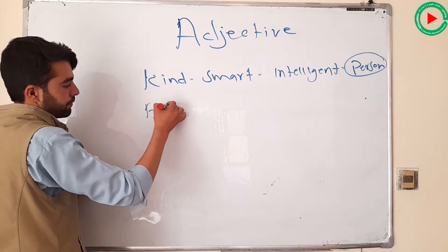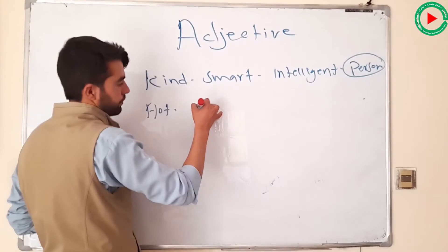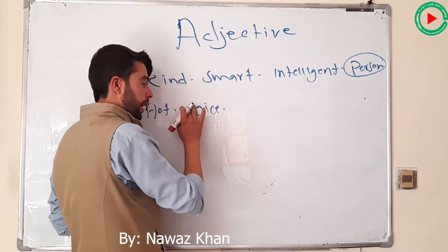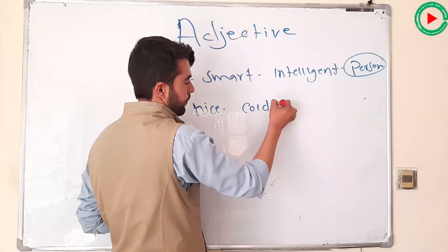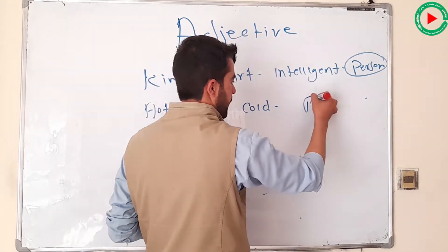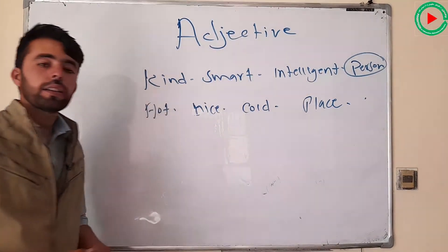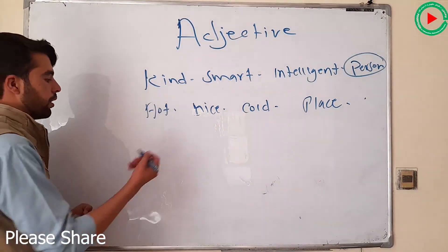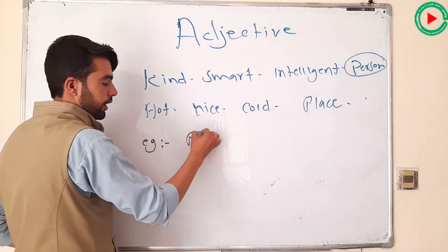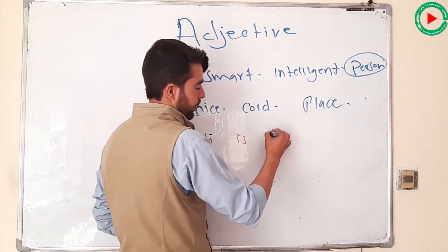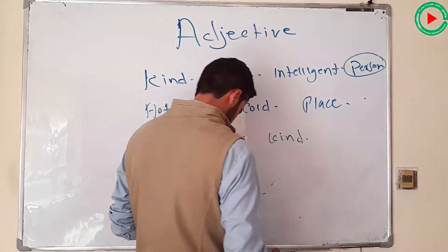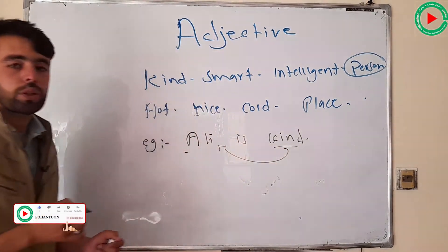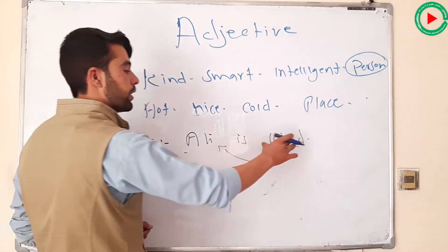For example: hot, hard, nice, cold. Ali is kind — this is an adjective of quality. It shows the quality of a person. My marker is nice — this shows the quality of a thing.